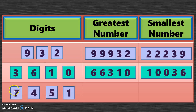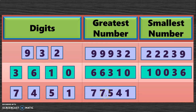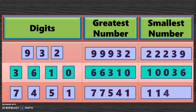For the last 5-digit exercise with 4 given digits, the greatest 5-digit number is 77,541 and the smallest 5-digit number is 11,457.